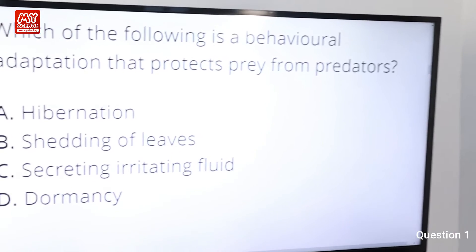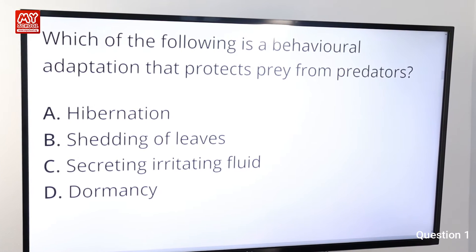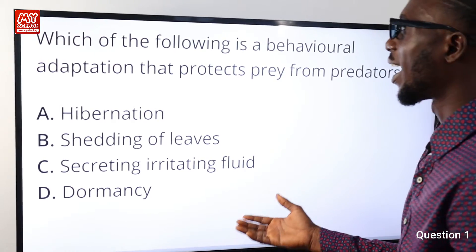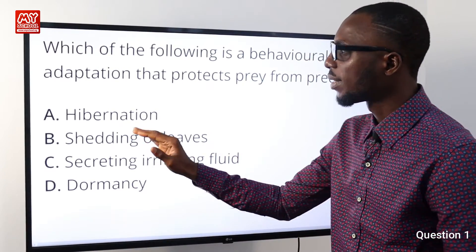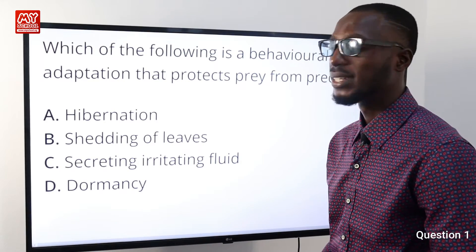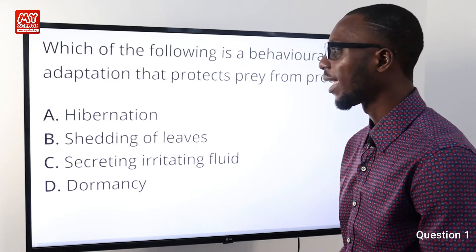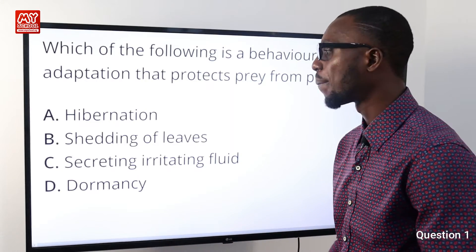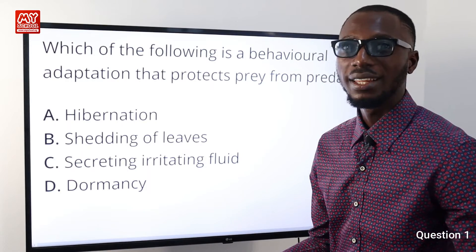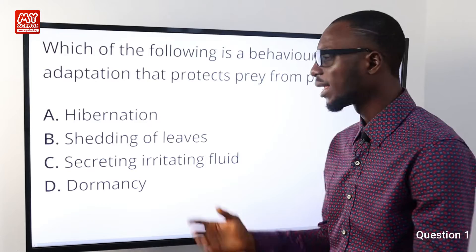Question number one: which of the following is a behavioral adaptation that protects prey from predators? So which behavior do animals or living things adapt with to protect them against predation? Option A is hibernation — that is when a particular living organism tries to survive a cold period, a cold season; for instance, bears in their caves. Option B is the shedding of leaves, done by trees when they try to remove leaves to survive harsh weather conditions, probably during the dry seasons.